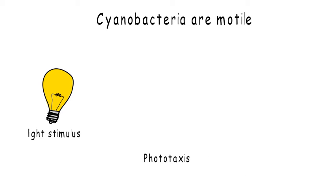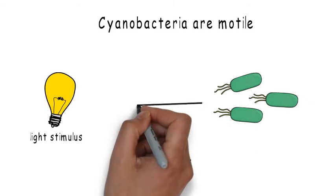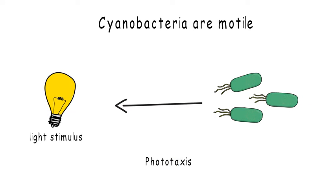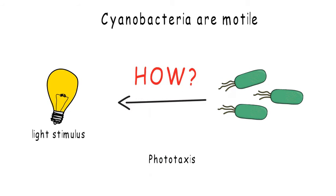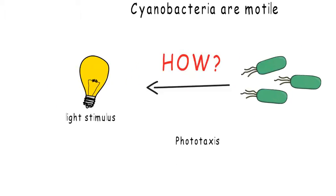When exposed to a unidirectional light source, cyanobacteria will move directly towards the light source. This phototactic behavior in cyanobacteria has been known for a long time, but the mechanism by which cyanobacteria perceived light and its direction was not clear.